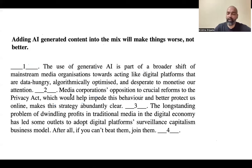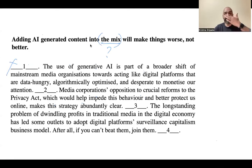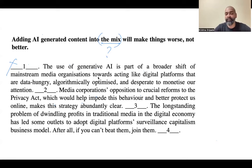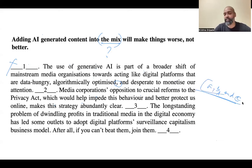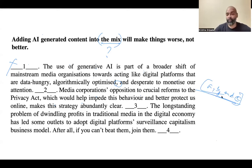Question three is easier if you understand context and upstream-downstream arguments. The bold statement is: 'Adding AI-generated content into the mix will make things worse, not better.' It can't be blank one because 'which mix' needs context — something has to explain what that mix is. The next sentence: 'The use of generative AI is part of a broader shift of mainstream media organizations towards acting like digital platforms that are data-hungry, algorithmically optimized, and desperate to monetize our attention.'